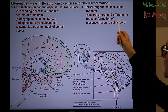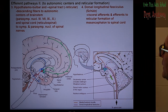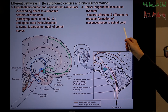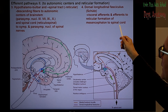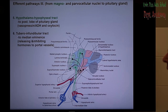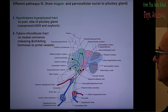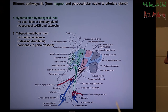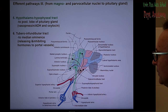The dorsal longitudinal fasciculus is similar — it sends input to the spinal cord, not directly but through the reticular formation. The last two efferent pathways are very special and most researched in our department: the hypothalamohypophysial tract and the tuberoinfundibular tract — the connections between the hypothalamus and the pituitary gland.